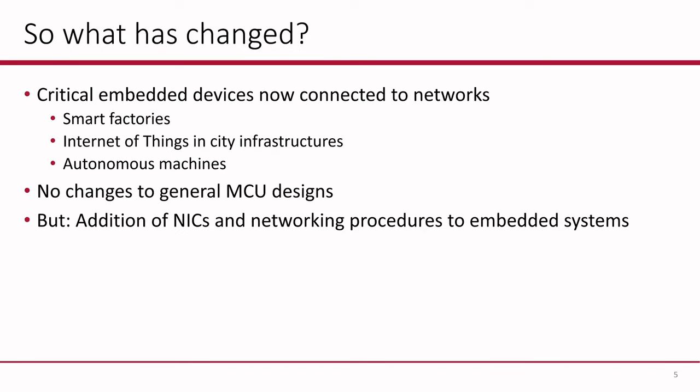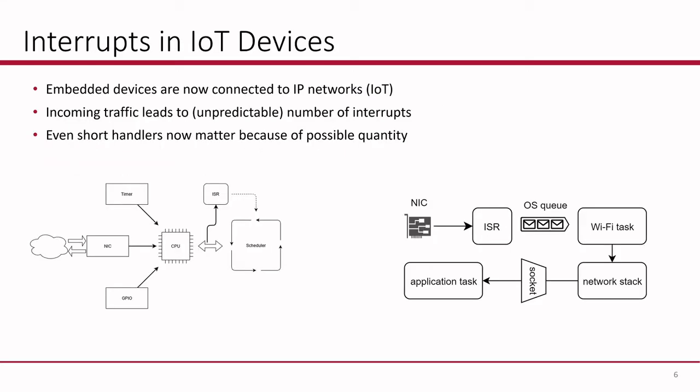So what has changed now? Critical embedded systems are now connected to networks. You see this in the Internet of Things, of course, in smart factories, but also in city infrastructures, in autonomous machines and autonomous driving as well. However, there have been no changes to the general designs of microcontroller units, with the exception of the addition of network interface controllers — for example, Wi-Fi chips — and the networking procedures that are needed. This is a problem, because the embedded devices are now connected to IP networks, and the network interface controller is of course a new source of interrupts.